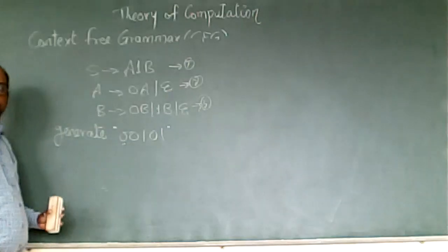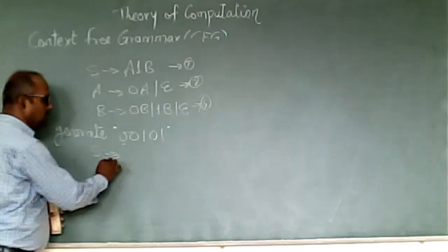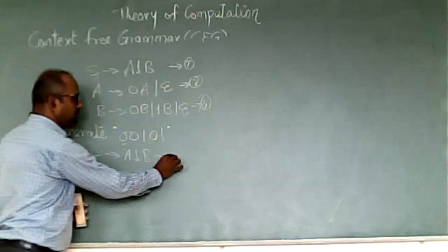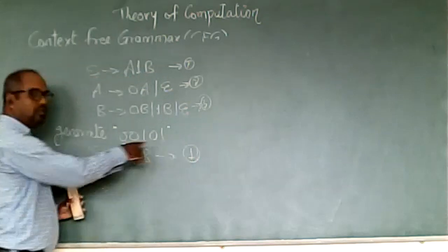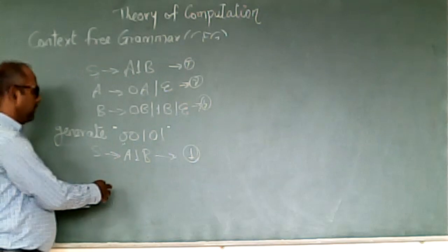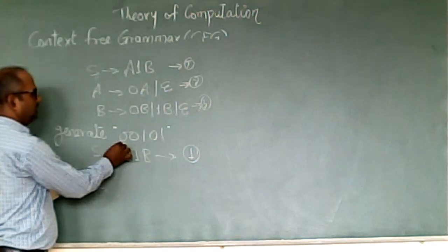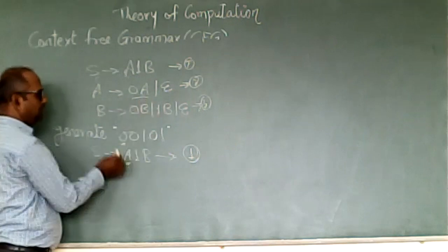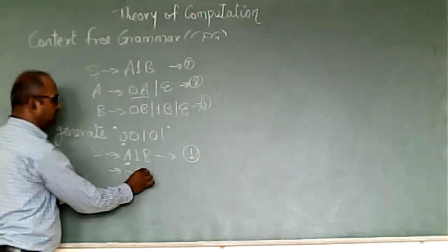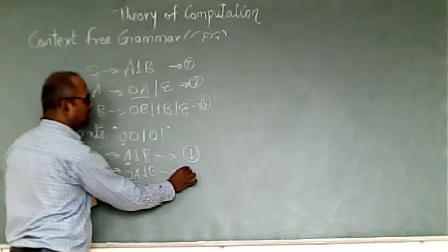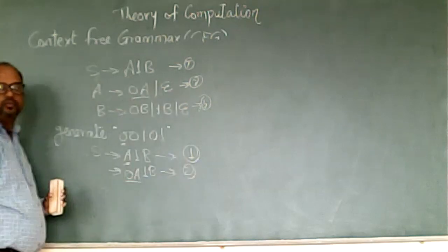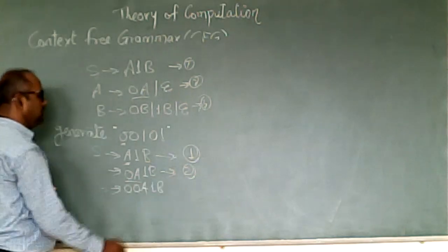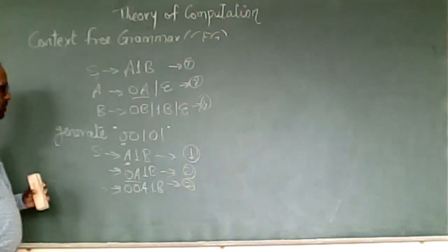Now we see how to derive the string using these productions. We always start with the starting symbol S. S is replaced with A1B using production 1. Now the first symbol should be zero, so we replace A with 0A using production 2, giving us 0A1B. We apply production 2 again to get 00A1B, because we want one more zero.